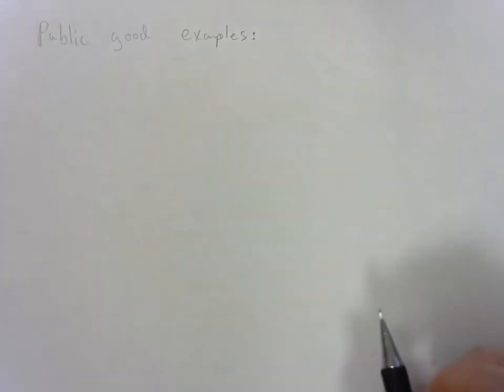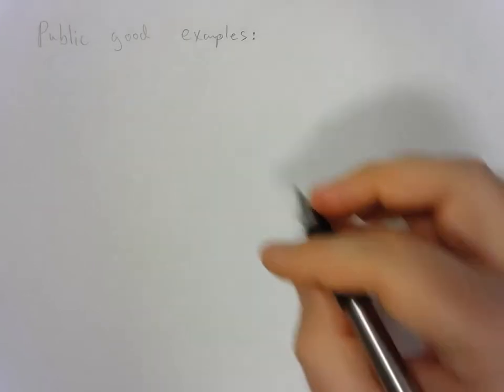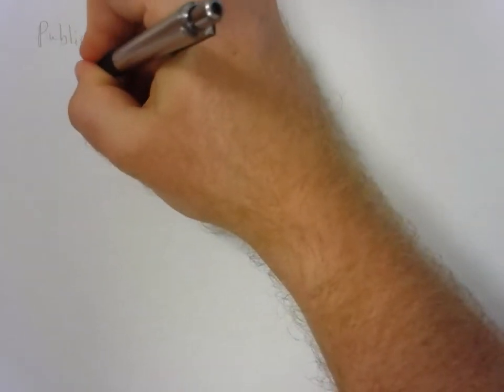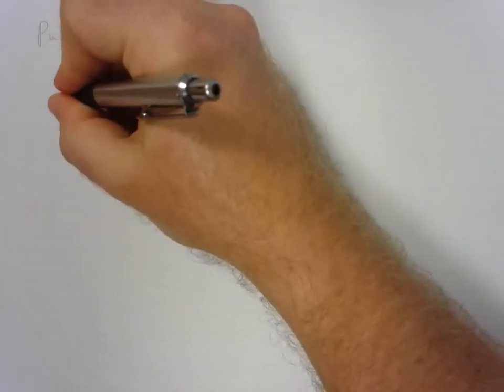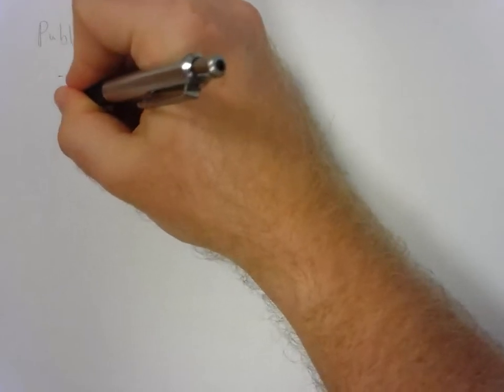All right, this video is going to go over public good examples. The trick here is to remember the definition for a public good. So we want to know if a good is rival and or excludable.